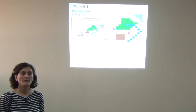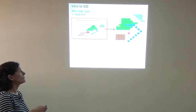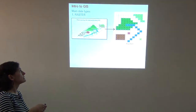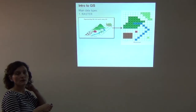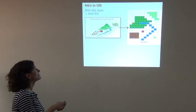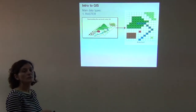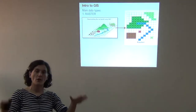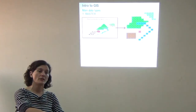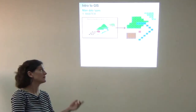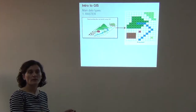A student asks about the relationship between the symbols shown and features like mountains and the number of cells. The answer is: this would be mountains, forest, crop — it's representing, just like dropping a grid, the values of the cells represent the particular feature that exists in reality. If it's a mountain, this is a mountain. If it's some crop, river, and so on.